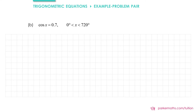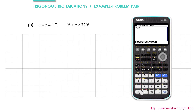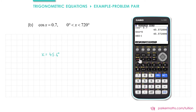In part b we have cos x equals 0.7 where x is greater than 0 but less than 720 degrees. To find our first solution we do inverse cos of 0.7, and that gives us x equals 45.6 degrees. As we're going to use it more than once we'll store the value in our calculator as a. Next we'll use the symmetry property for cosine, so we'll take our first solution and subtract it from 360, which gives us 314 to 3 significant figures.